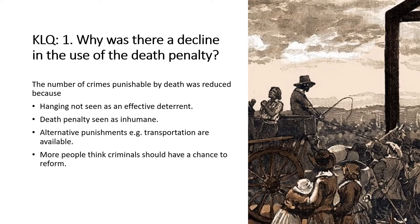Let's think about the death penalty first of all. You'll remember the Bloody Code, which was the name given to the excessive use of the death penalty in this period. Gradually the number of crimes punishable by death was reduced. Hanging wasn't seen as an effective deterrent — as they were hanging many people, it clearly wasn't stopping people committing crime. Another group of people saw the death penalty as inhumane, meaning they thought it was morally wrong and cruel.